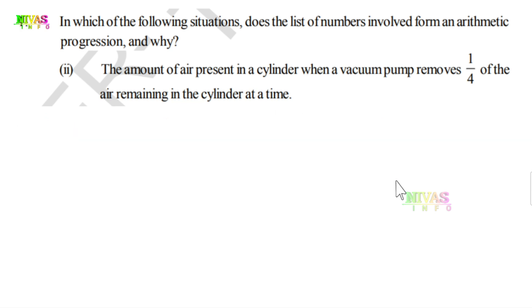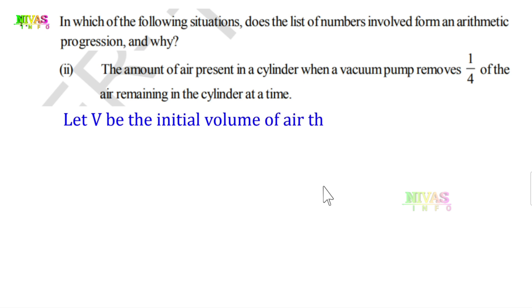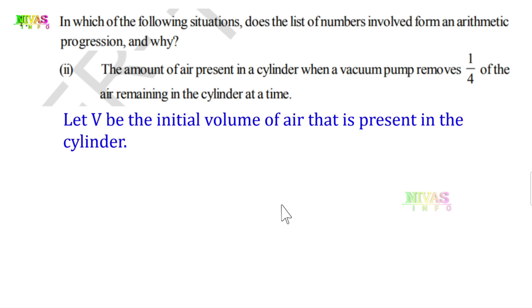Let V be the initial volume of air present in the cylinder. The vacuum pump removes 1/4 of the air each time.